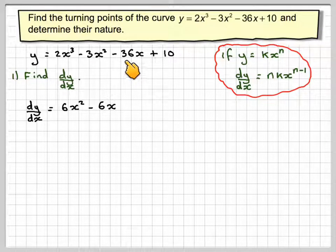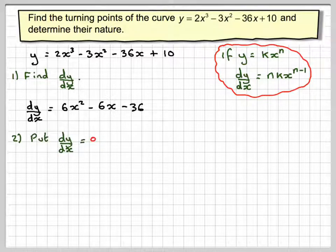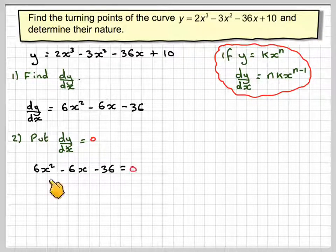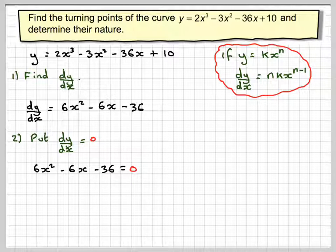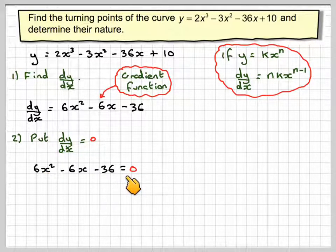If you differentiate -36x you get -36, and if you differentiate 10 you get nothing. So the next step is to put dy/dx equal to 0. We take this gradient function 6x² - 6x - 36 and set it equal to 0. This is called the gradient function.